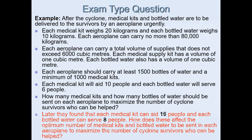For the excellence part, they found that each medical kit can aid 16 people instead of the previous estimate of 10 people, and each bottled water can save 8 people instead of the initial estimate of 6. The question asks how these changes affect the optimum number of medical kits and bottled water to send on each airplane to maximize the number of cyclone survivors who can be helped.